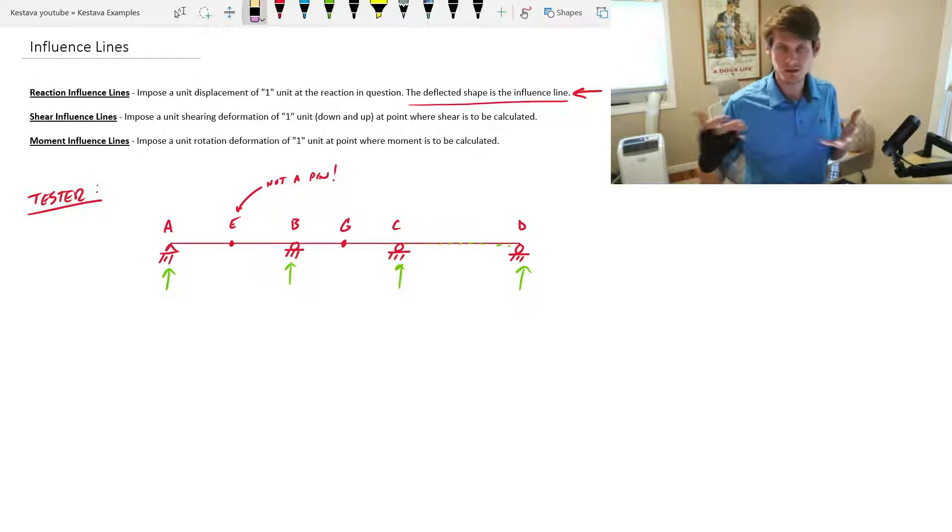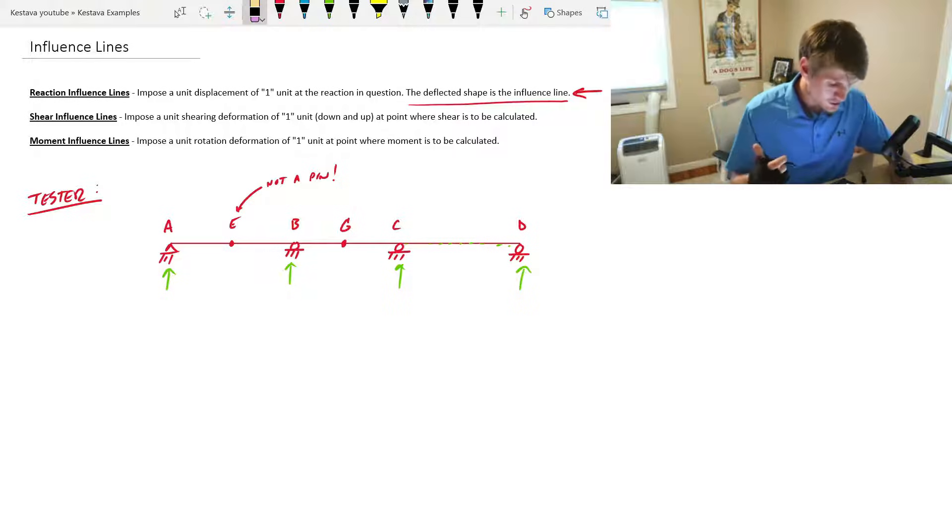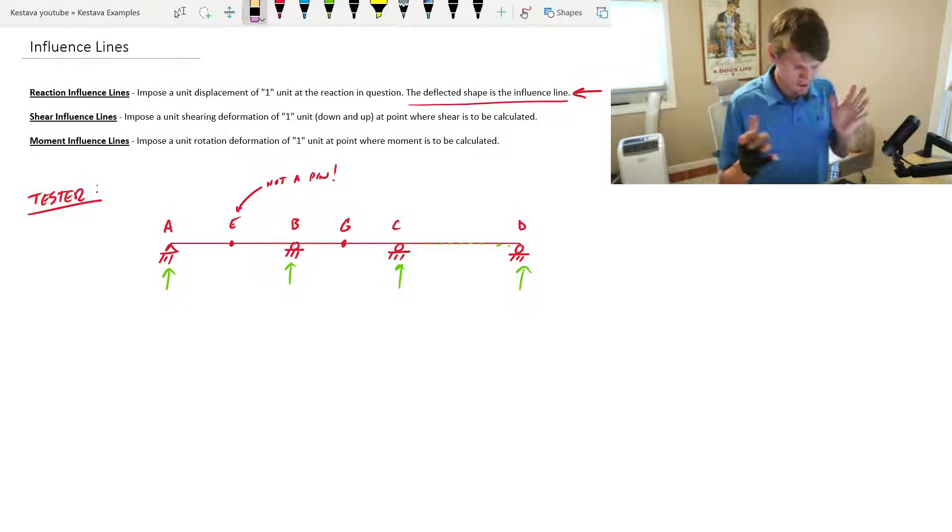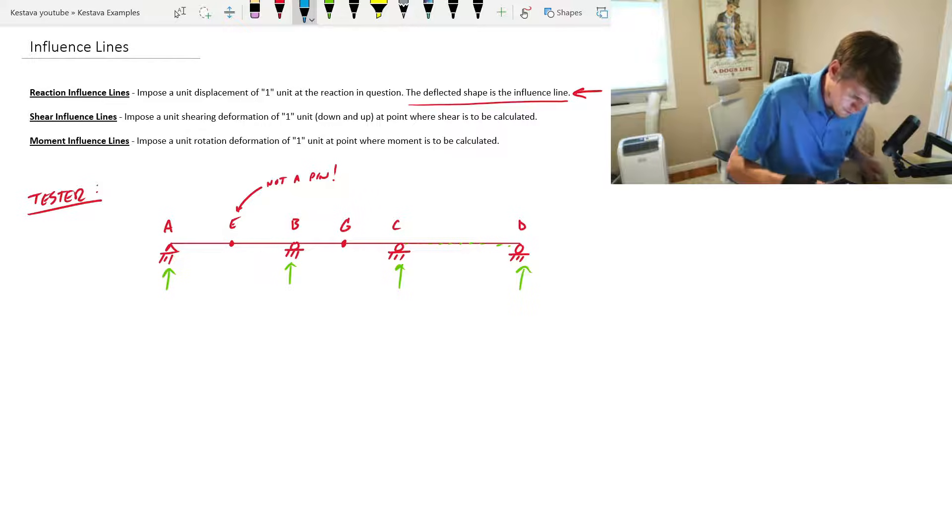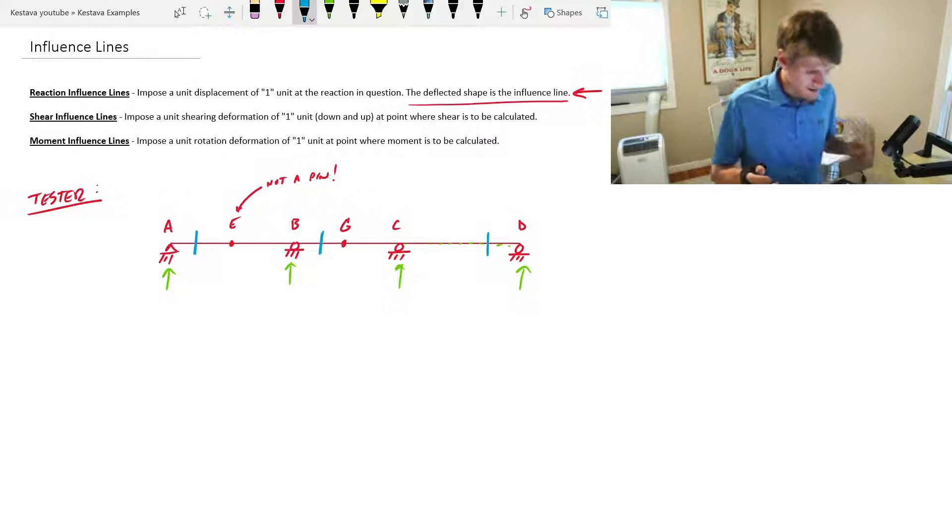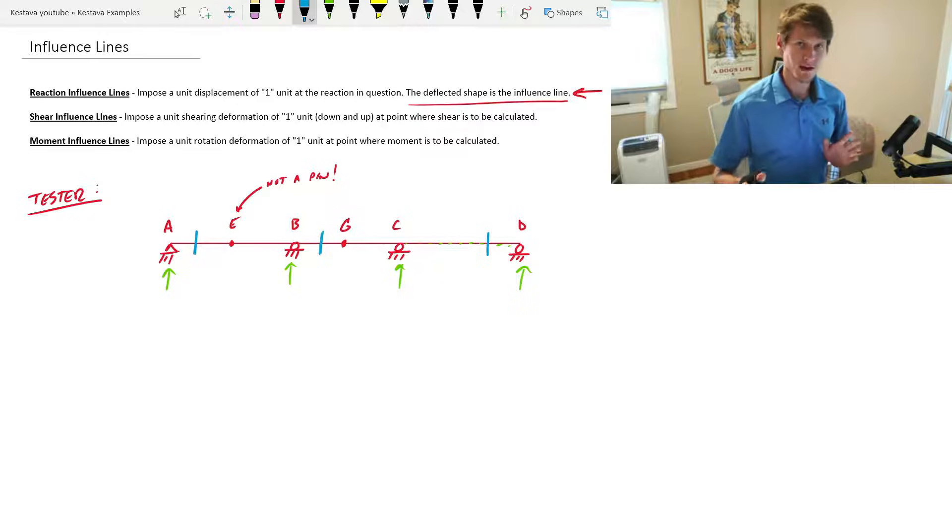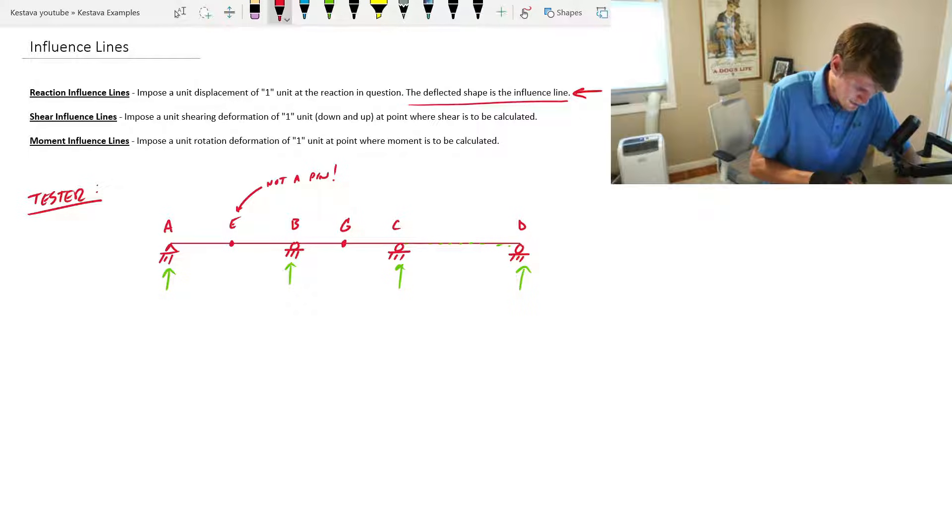Rule number two, shear influence lines. This is just determining shear in your beam along your system here. Impose a unit shear deformation of one unit, and I put in parentheses here, this is my little rule: down and up, and you'll see why later, at the point where shear is to be calculated. So at that location where you're trying to figure out how much shear demand do I have here or over here or over here, anywhere along your system, you can find shear demand and you can use the influence line to determine that.